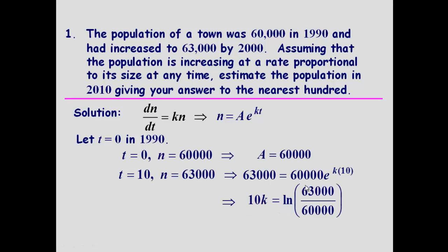If we now solve that by logging, if we get 60,000 over there, divide by 60,000, that just leaves an e term here. So we can then ln both sides, natural log both sides. And that then enables us to solve for k. And we get k as 0.00488. Log this in your calculator and then divide by 10.